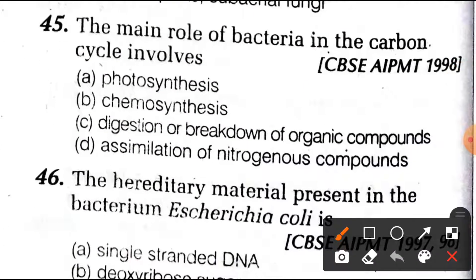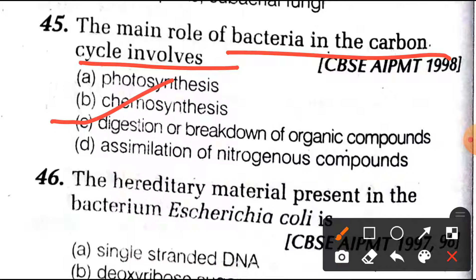Question number 45: the main role of bacteria in the carbon cycle. Option C is the right answer: bacteria help in the digestion and breakdown of organic compounds.